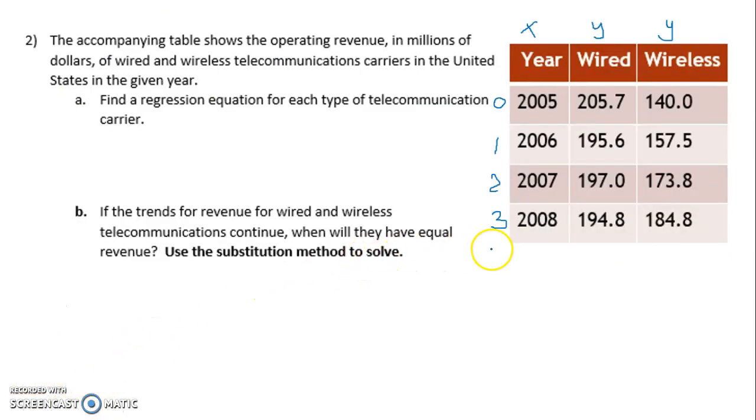So the equation that we got from our calculator was Y equals, and our first number was negative 3.31, excuse me, negative 3.13, I said that backwards, X plus 202.97. And this was for the wired. So this is really answering part A. Put it off to the side here so that I can see it when I'm working on my calculator as well.